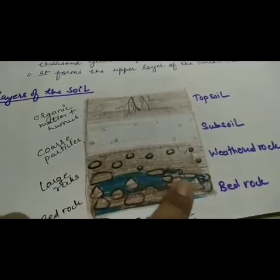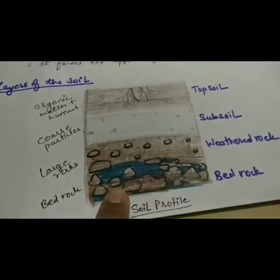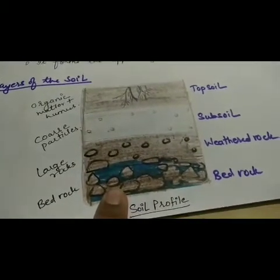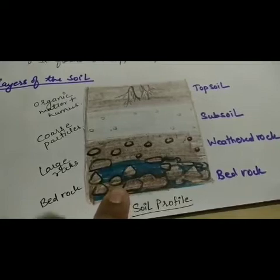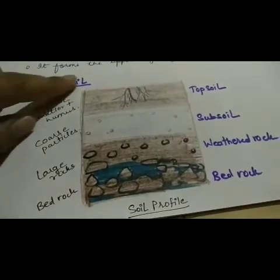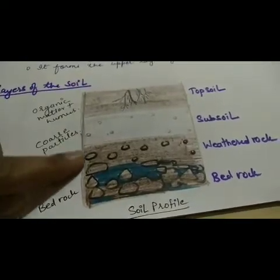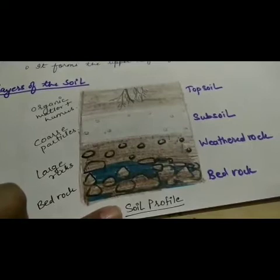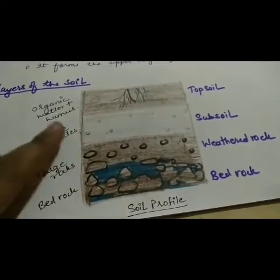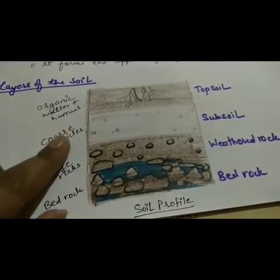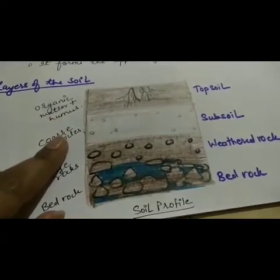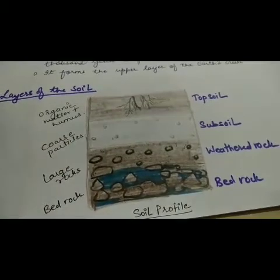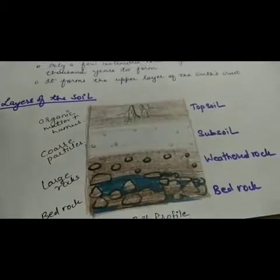Subsoil also consists of weathered rock and very little humus. Below the subsoil is a layer of large chunks of weathered rocks, and below that is the bedrock, which is tightly packed rock through which water cannot seep. The water collects here and forms the underground layer of water. This diagram is known as the soil profile and these layers are also known as horizons.